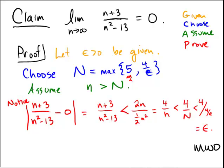And that's generally how you find bounds on these rational expressions in order to prove the limit of a rational function.